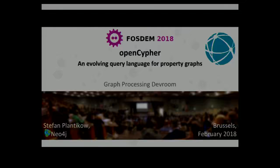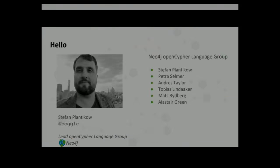Good morning everybody. Wonderful day. This is the first talk of the Graph Processing Dev Room here at FOSDEM. The title of the talk is OpenCypher, an Evolving Query Language for Property Graphs. My name is Stefan Plantico. I'm the lead of the OpenCypher Language Group at Neo4j — that is the group at Neo4j that dominantly works on the design of the Cypher language.